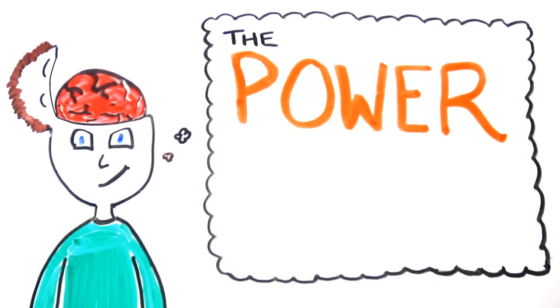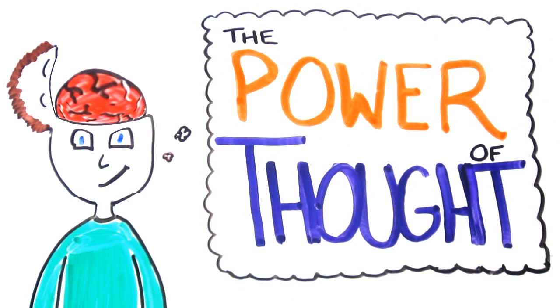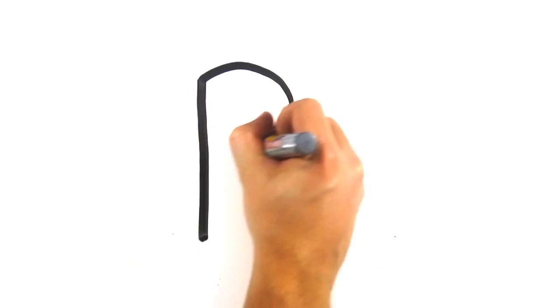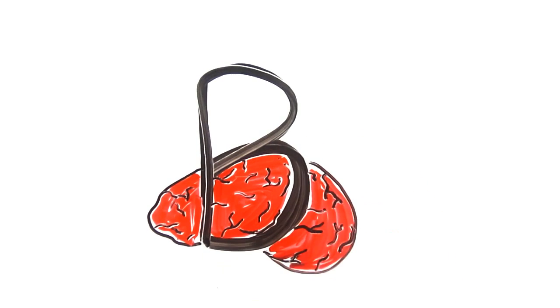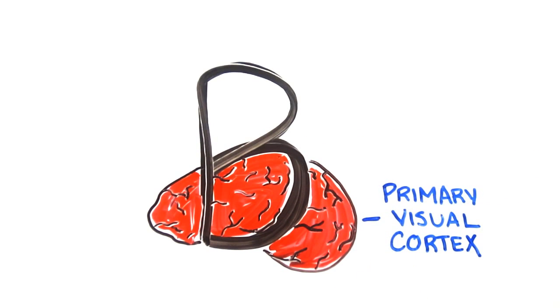From a neuroscientific standpoint, imagining an action and doing it require the same motor and sensory programs in the brain. For example, if you were to close your eyes and imagine the letter B, the primary visual cortex lights up in the same way it does when you look at the letter on the screen.